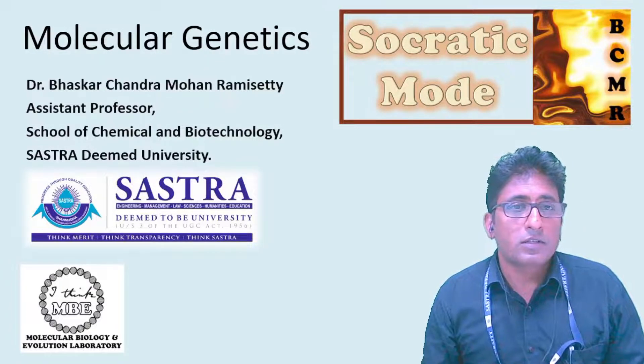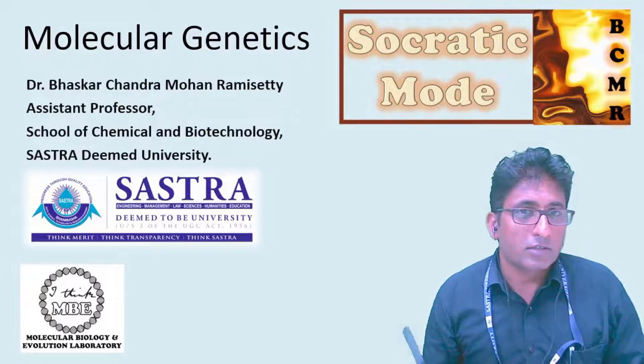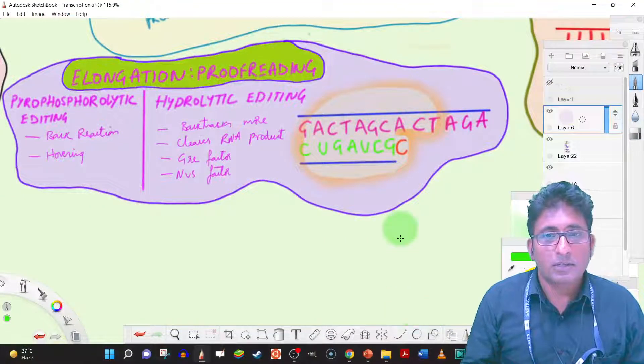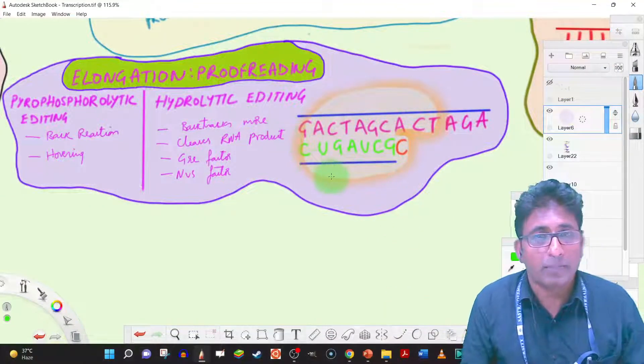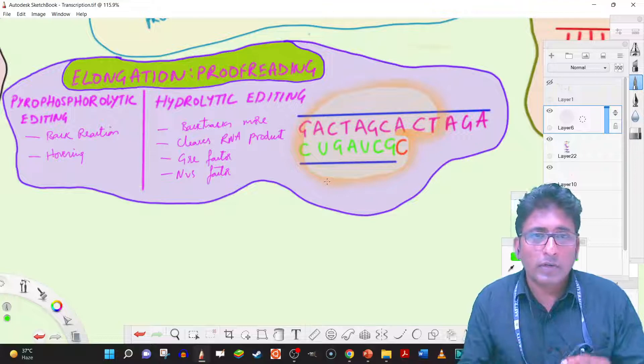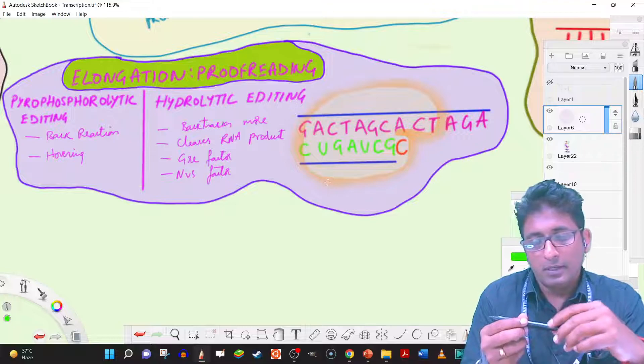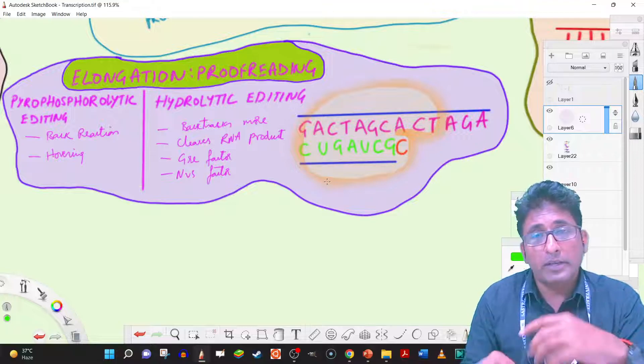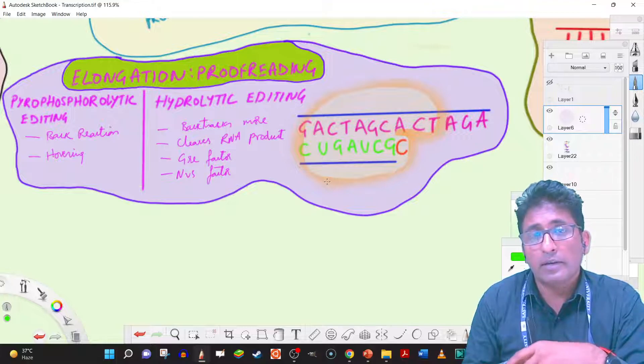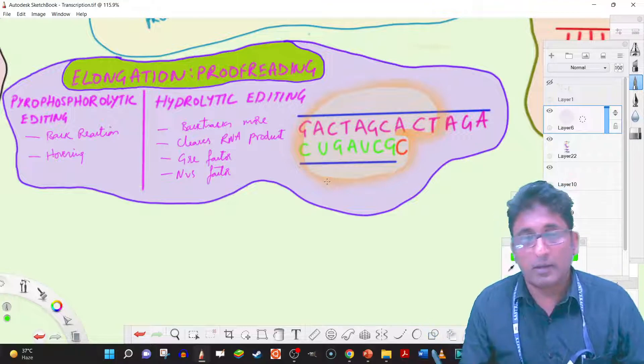And in that sense, if we were to read about elongation, one thing that should come to us is about reading about the proofreading mechanisms. What would happen if a wrong base has been added? If we can recollect, we said something like,